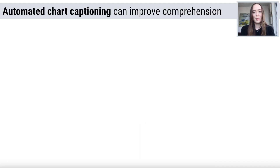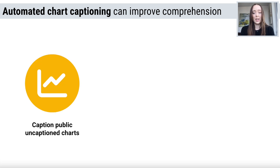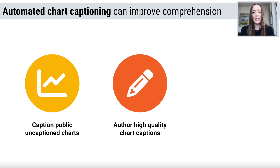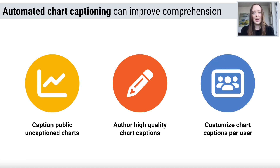Despite chart captions playing an important role in chart comprehension, charts are rarely captioned in practice. However, automated chart captioning systems aim to make the captioning process easier and improve chart literacy by providing captions for existing uncaptioned charts, helping users author high-quality captions, and even customizing captions based on user preferences or expertise.